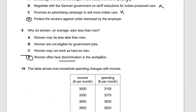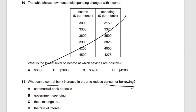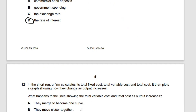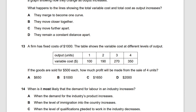Question ten: what can a central bank increase in order to reduce consumer borrowing? We've looked at central banks and commercial banks in chapter three. They can reduce consumer borrowing by raising interest rates — when there's a high interest rate, people are less likely to borrow because they have to pay more.